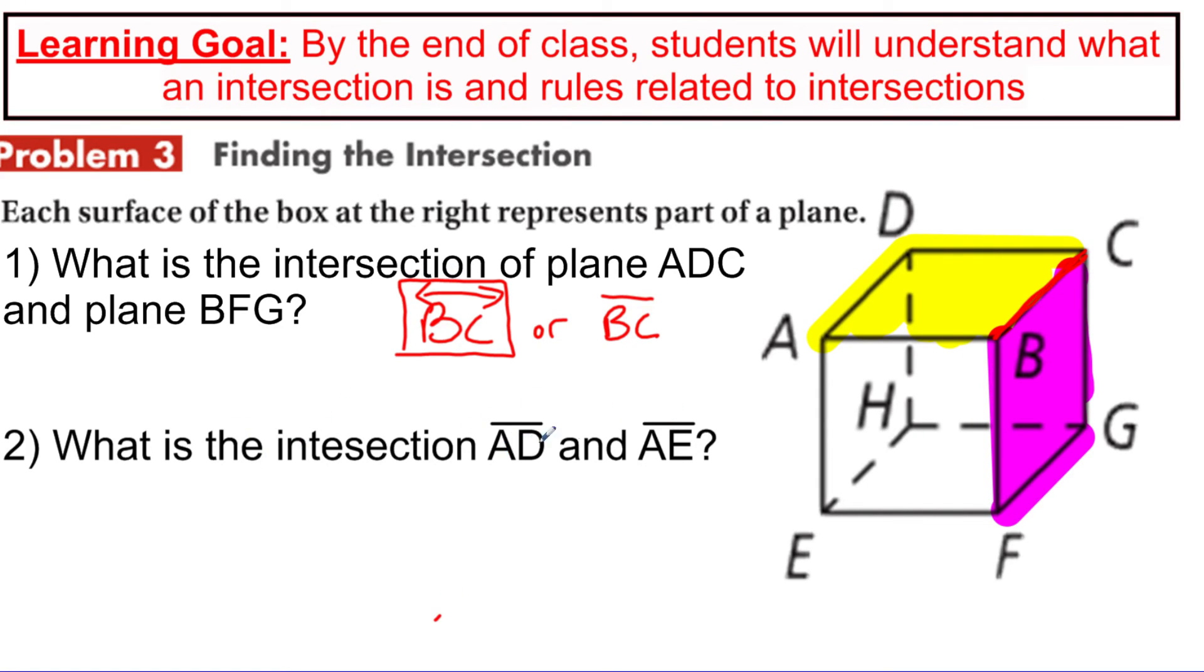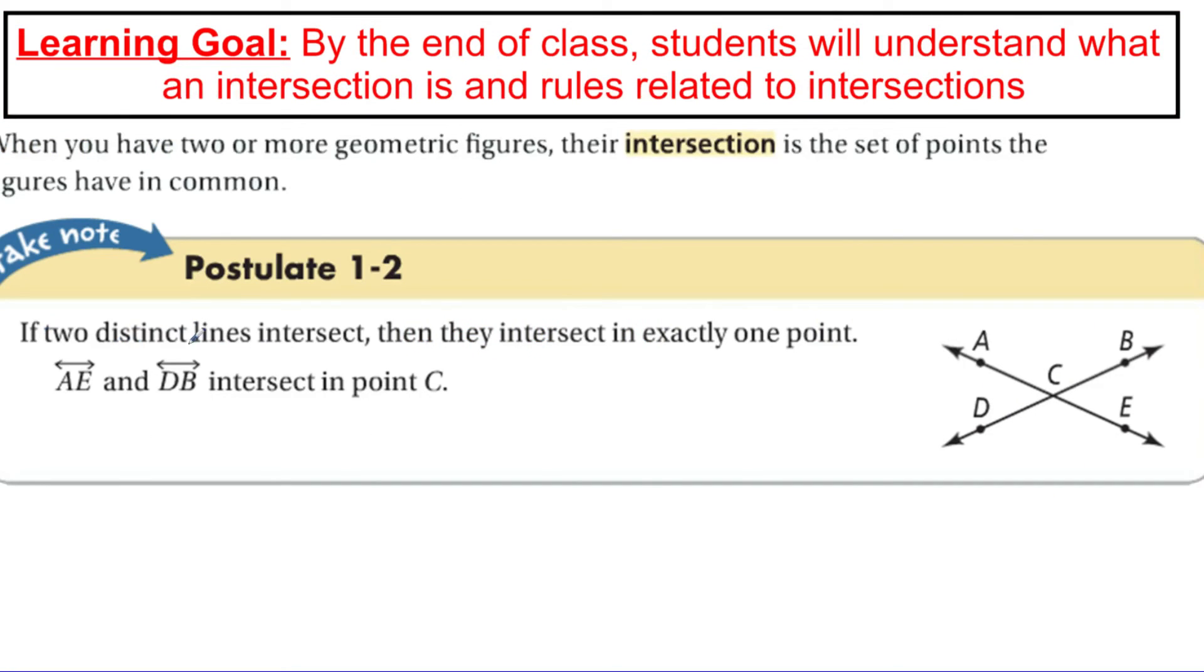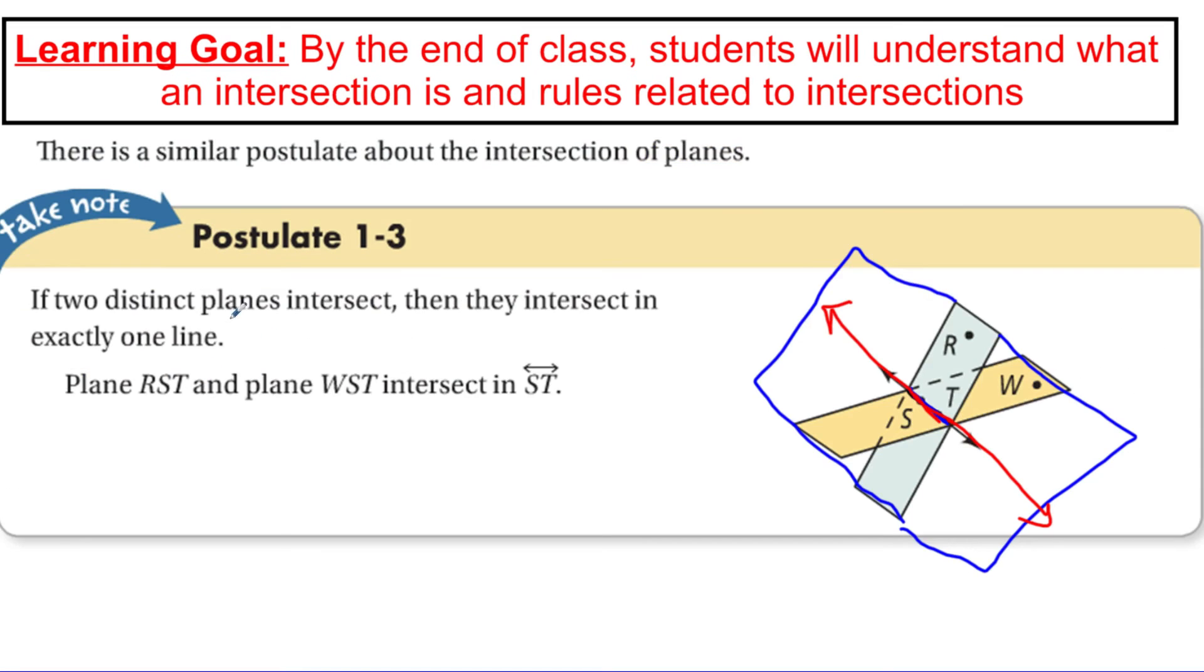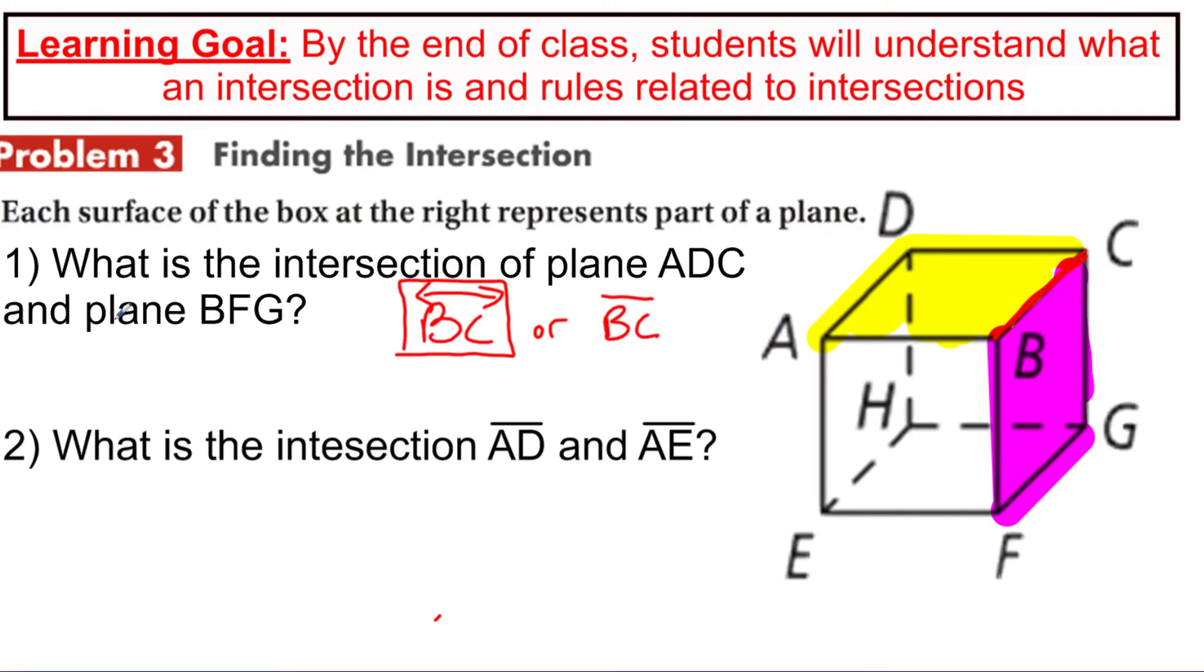What is the intersection of AD and AE? If you go back to this postulate, we said when we're talking about intersections of lines, lines intersect at a point. When we're talking about planes, planes intersect at a line. So that's why when I wrote this first one and it said planes are intersecting, my answer was a line. Now they're saying, what is the intersection of AD and AE? So again, let me grab my highlighter. Let's get rid of all this other stuff from the previous problem.